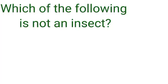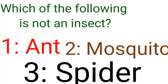Which of the following is not an insect? Option 1: Ant. Option 2: Mosquito. Option 3: Spider.